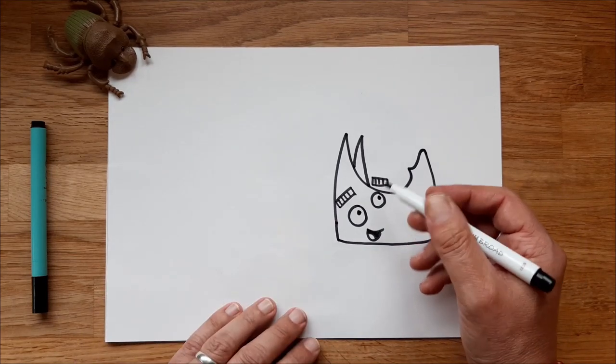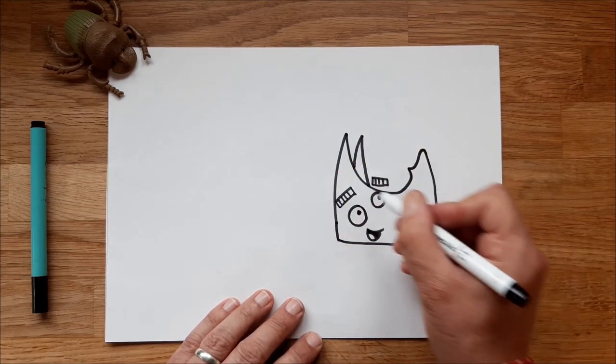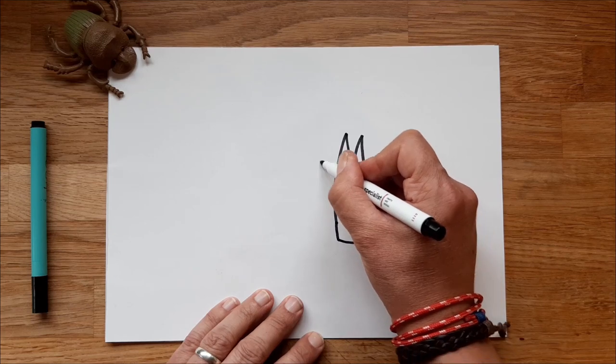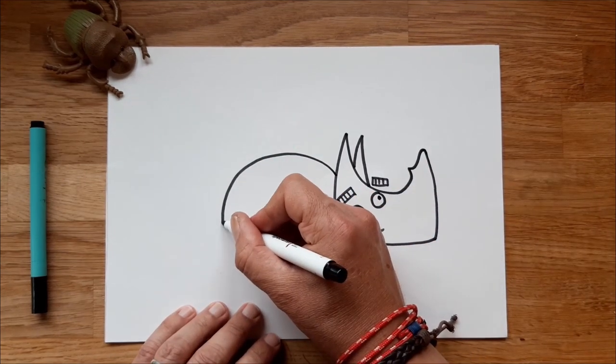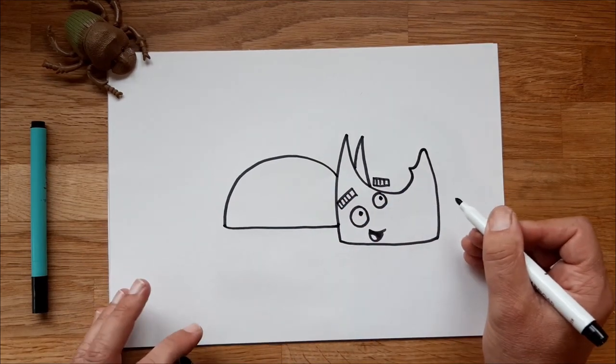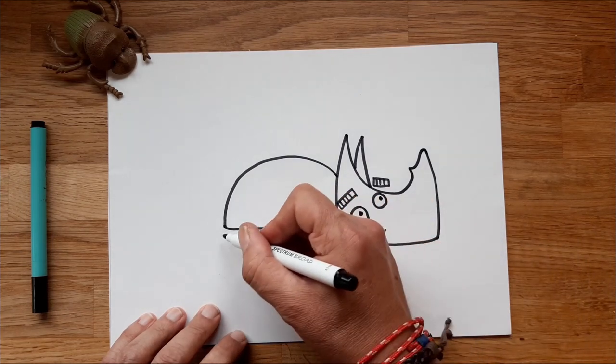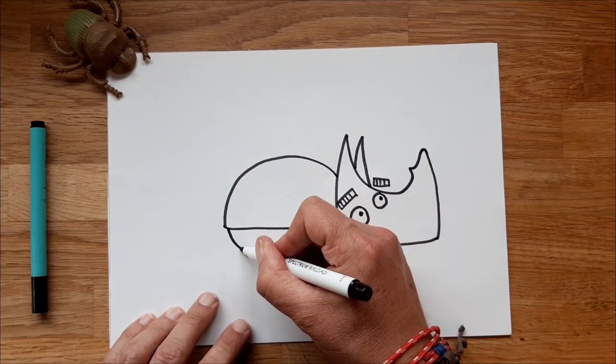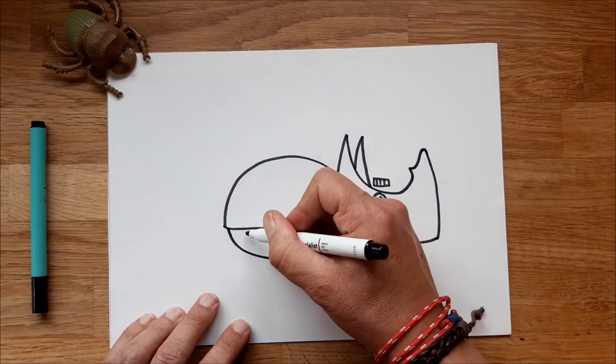Next, the body. So like all beetles, he has a nice big hard shell on his back, which protects him. So it's a big curved line, comes down like that. And then we'll draw a horizontal line across, up to his head or joins his head. And then his belly. He has a stripy belly. So that's another curved line that comes underneath, joins up under his head there,